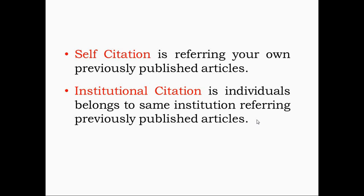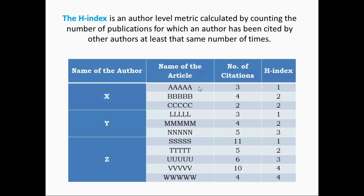The H-index is an author-level metric calculated by counting the number of publications for which an author has been cited by other authors at least that same number of times.